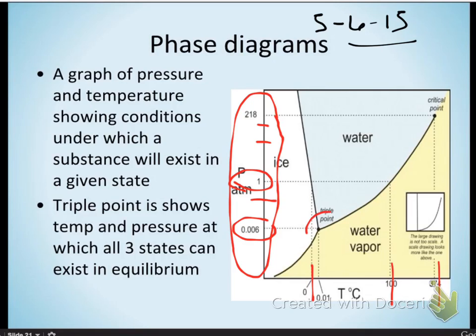Triple point exists on every phase change diagram. There is some point at which all three states of matter can exist in equilibrium. What does that mean? What does it mean if phases are in equilibrium? This is a review from a couple days ago.